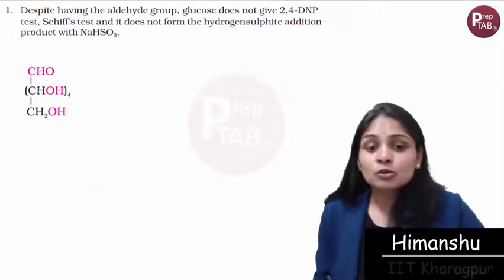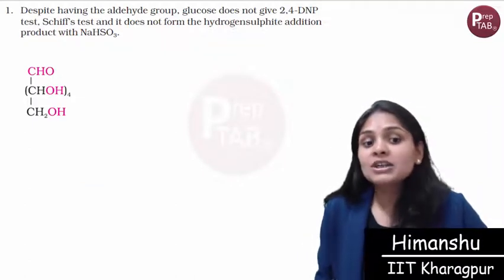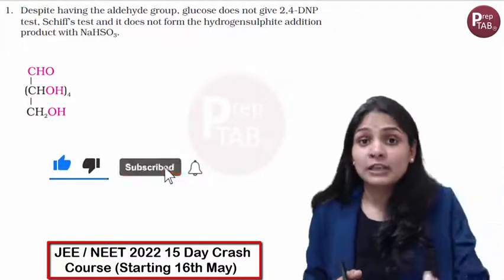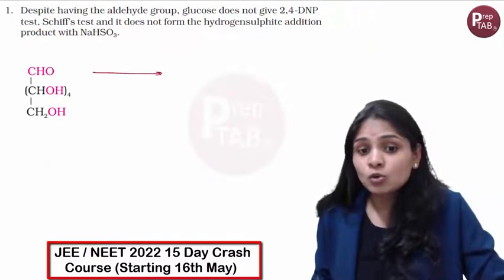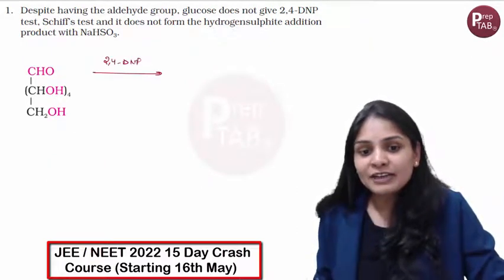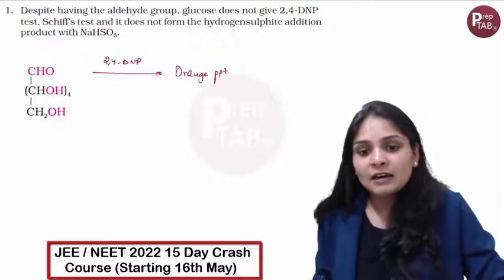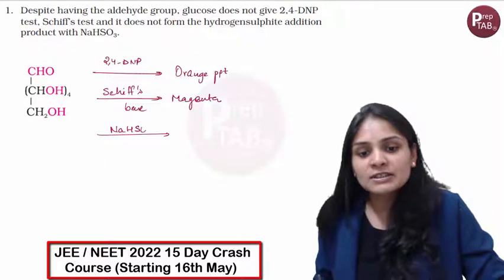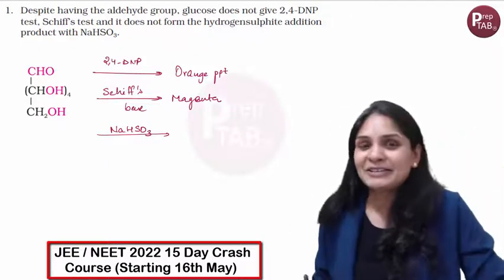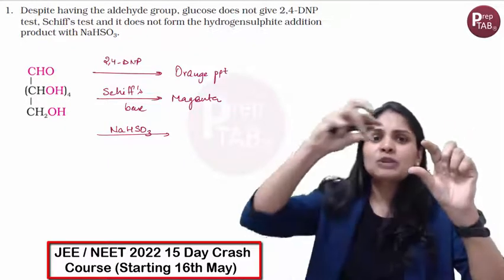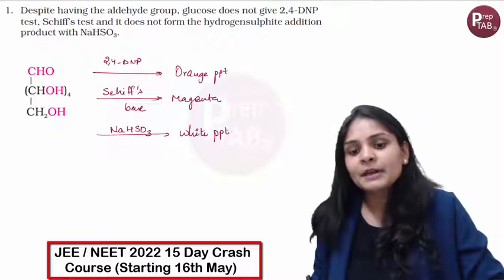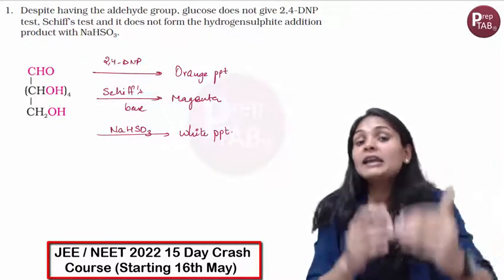Glucose structure has an aldehyde group and 5 hydroxy groups. The aldehyde group gives the test of an aldehyde group — if we treat it with 2,4-DNP, we get an orange precipitate. If we treat it with Schiff's base, we get magenta color. And if we treat it with sodium bisulfite, the aldehyde group gets added and a white precipitate forms. These reactions confirm the aldehyde group.